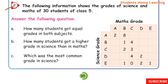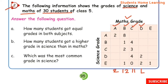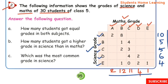The following information shows the grades in Science and Maths of 30 students of Class 5. Grades with Science and Maths counts: Grade A — 2+8 = 10. Grade B — 1+4 = 5. Grade C — 2+3 = 5. Grade D — 4+2 = 6. Grade E — 1+2 = 3, then 3+1 = 4. Adding all numbers gives a total of 30 students.